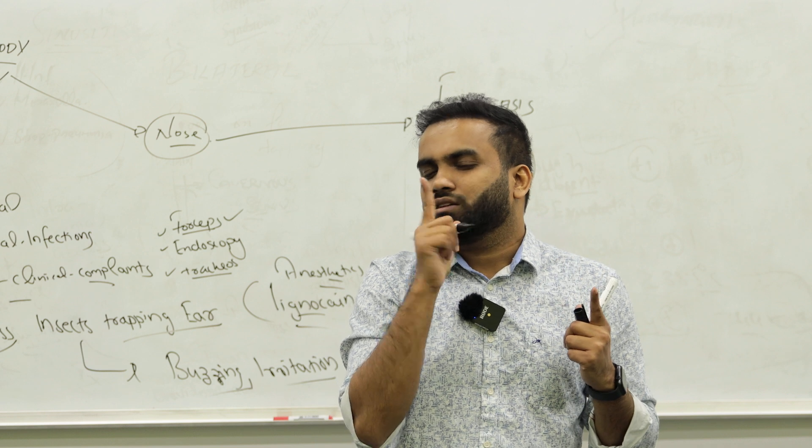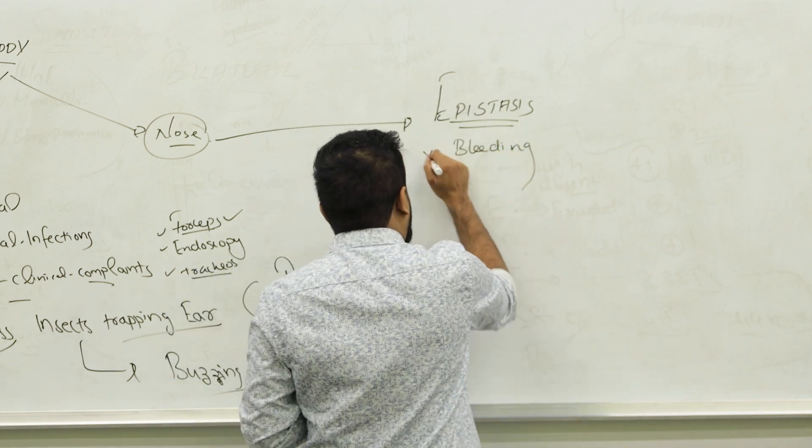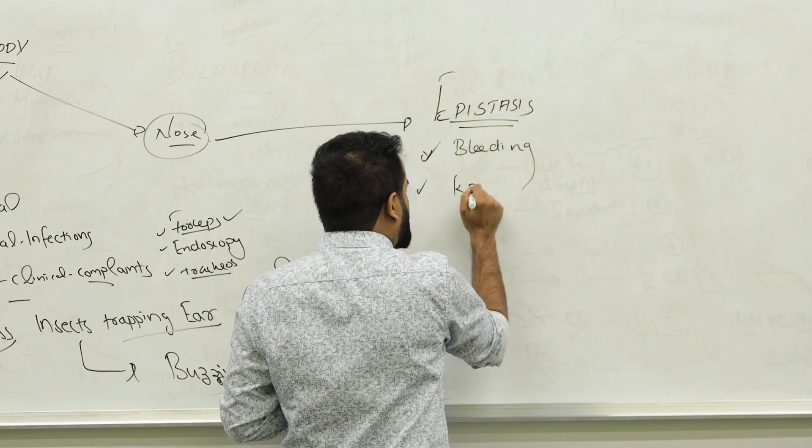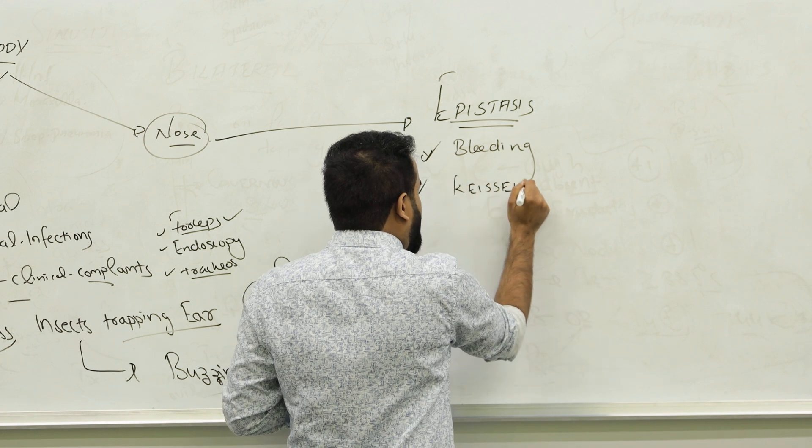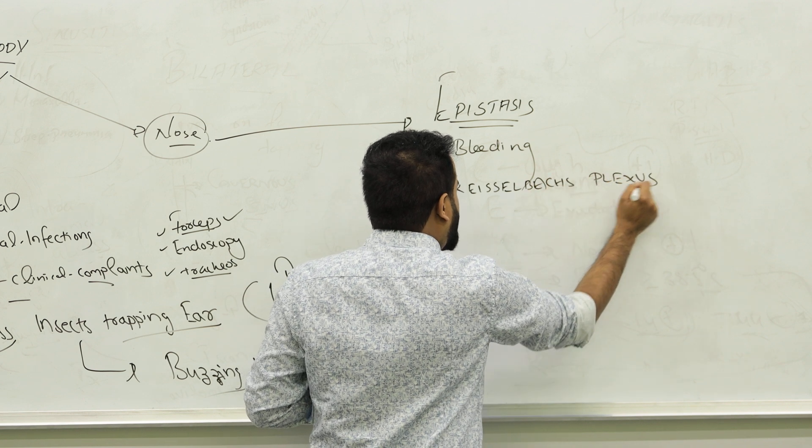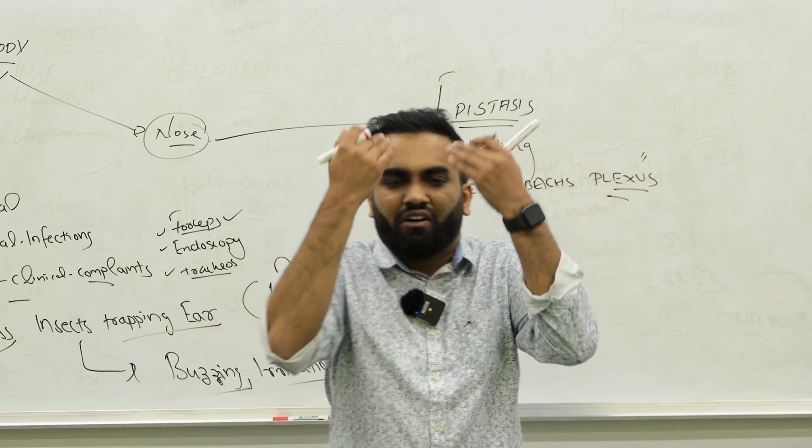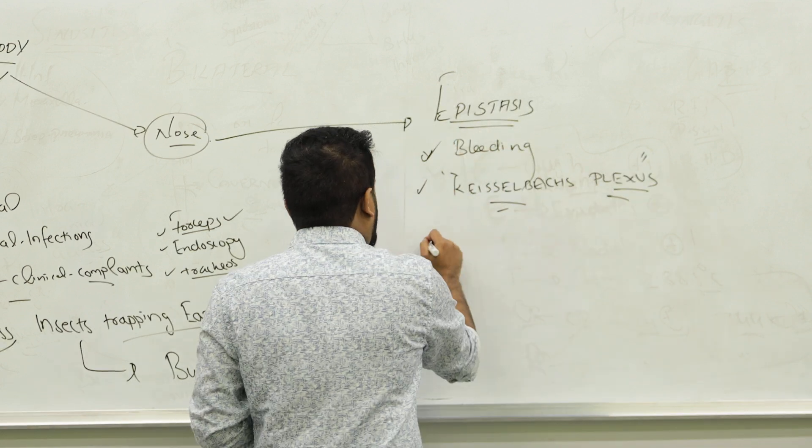Put their fingers in the nose or some trauma. So there is a damage to Kesselbach plexus. There is a plexus inside the nose called Kesselbach's plexus. You might have heard in anatomy, sphenopalatine artery and all. They join to form a plexus. That will be damaged and you will have continuous bleeding.